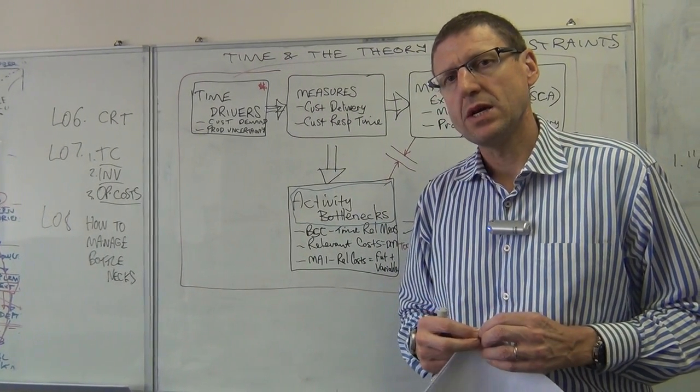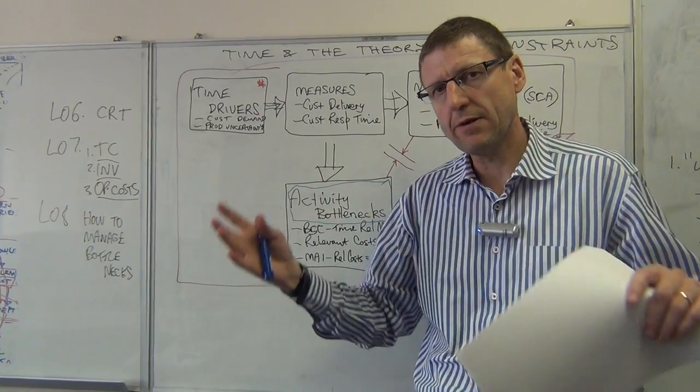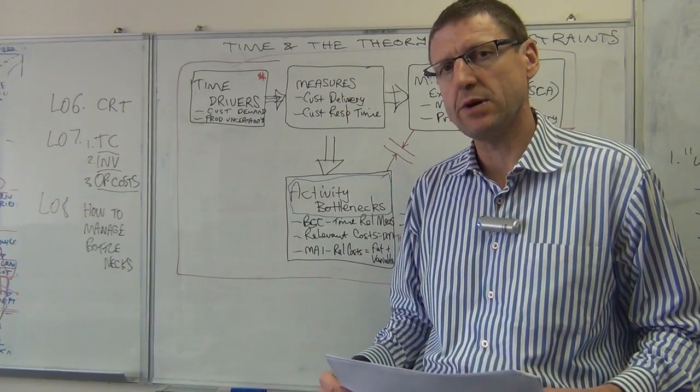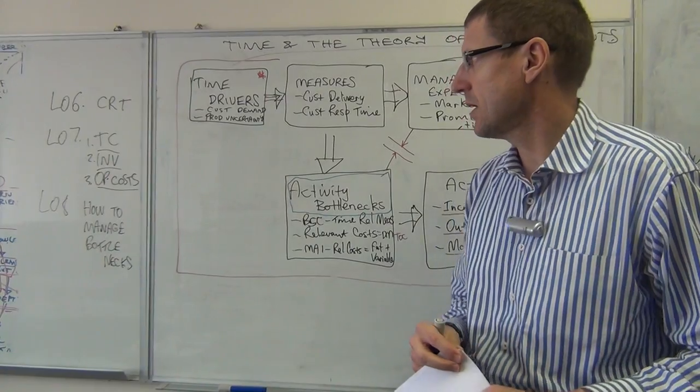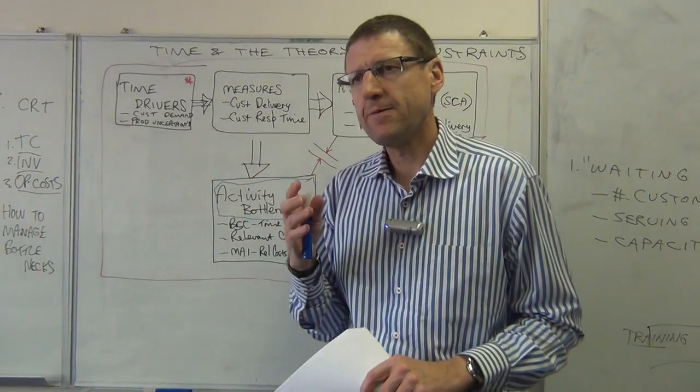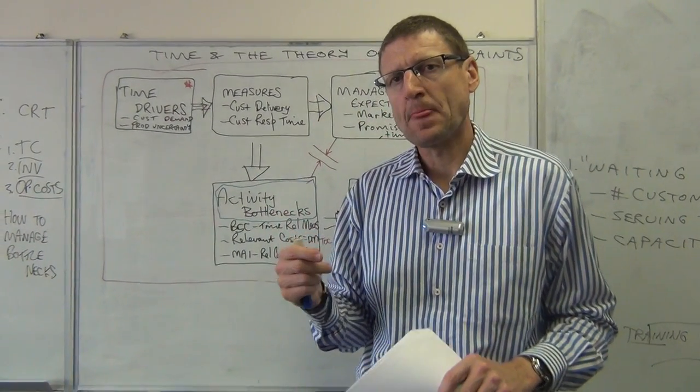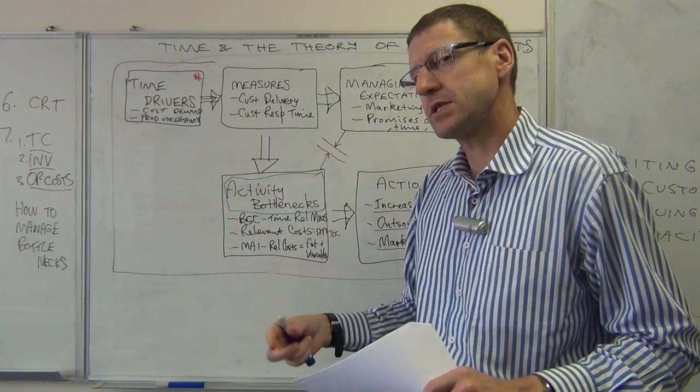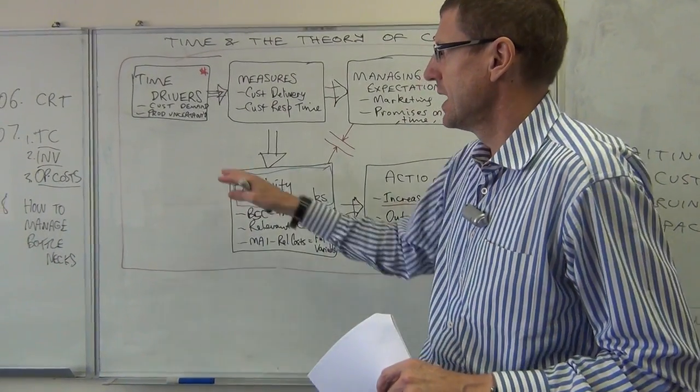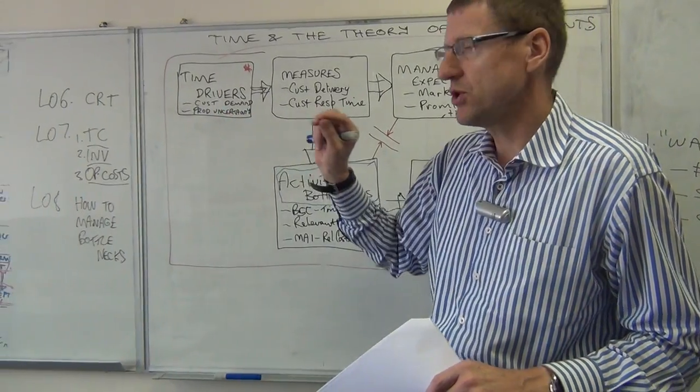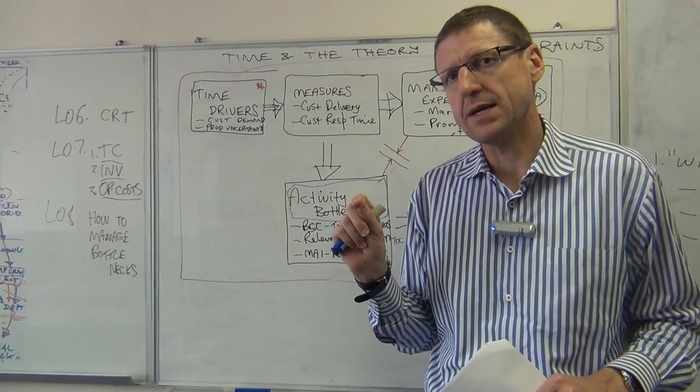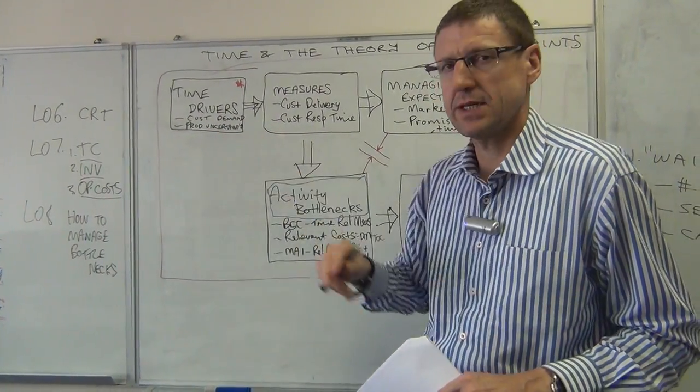But before I do that, what is very important is have a look at the big picture in which firms are trying to compete on time. You see, firms face a lot of uncertainty. And generally that uncertainty creates time pressures to do things. And that uncertainty is caused by two main things: customer demand and production uncertainty.